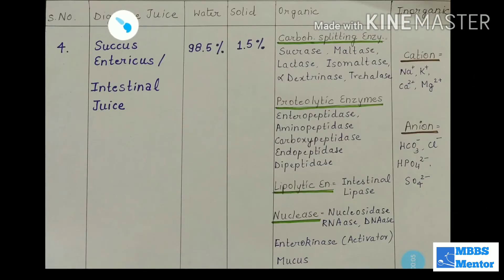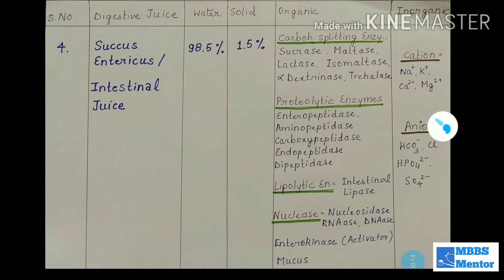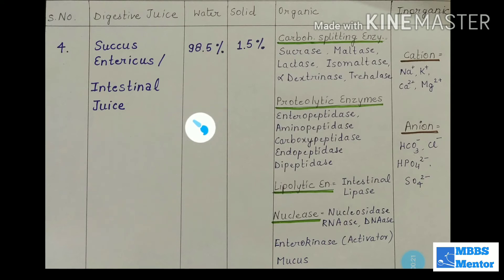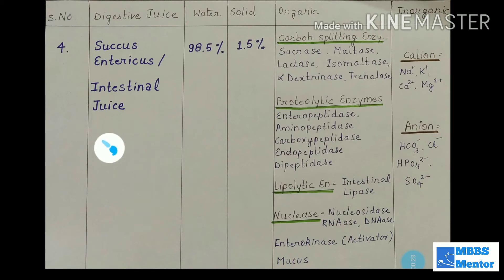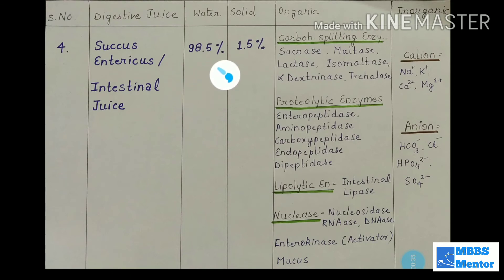Now the last and most important juice: succus entericus, also known as intestinal juice. It is composed of secretions from the small intestine. The large intestine is not involved here — its main functions are storage of fecal matter and absorption of water. Succus entericus is released by the small intestine and has 98.5% water and 1.5% solids.